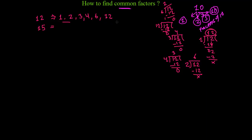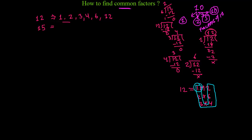I've already shown you the trick to find factors: you write pairs that multiply to give the number. So for 12: 1 times 12, 2 times 6, and 3 times 4. That gives us all factors of 12: 1, 2, 3, 4, 6, and 12.